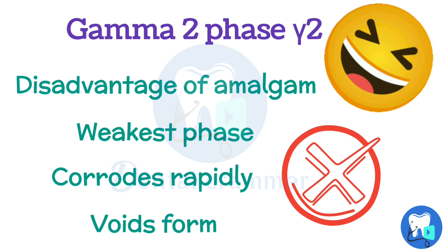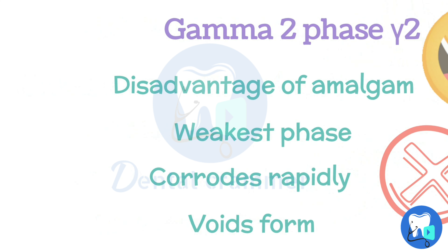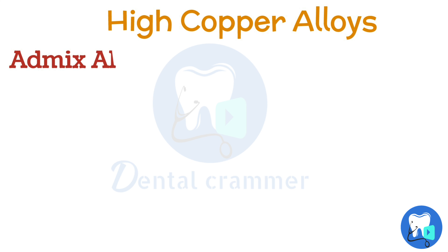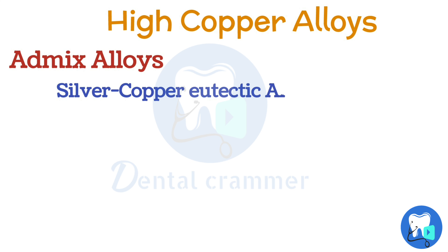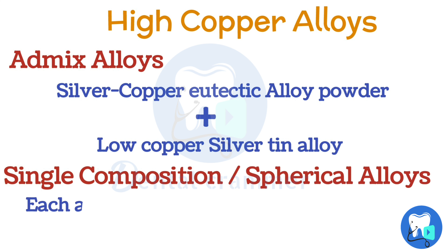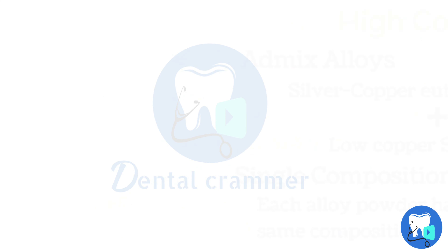High copper amalgam alloy was introduced in order to overcome the gamma 2 phase and achieve better strength. High copper amalgam alloys are classified into admix alloys and single composition alloys. In admix alloys, silver copper eutectic alloy powder is added to low copper or conventional silver tin alloy. In single composition alloys, each alloy powder has the same composition.